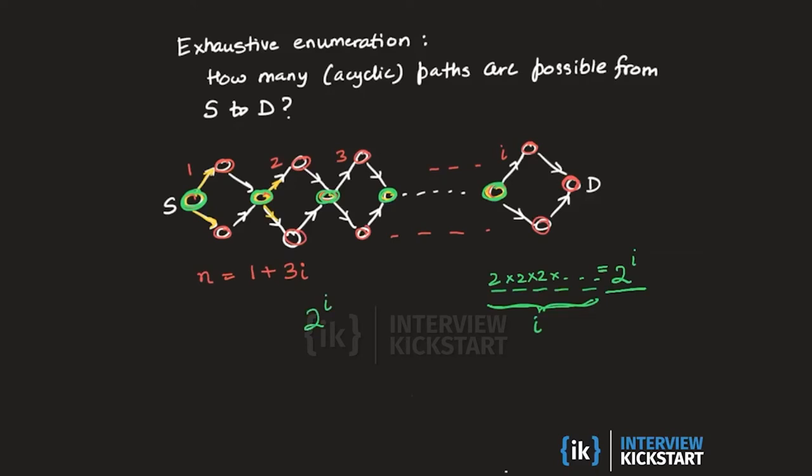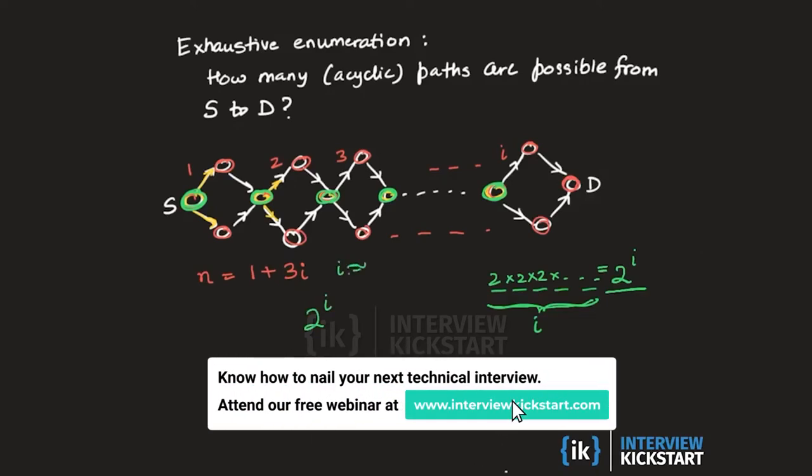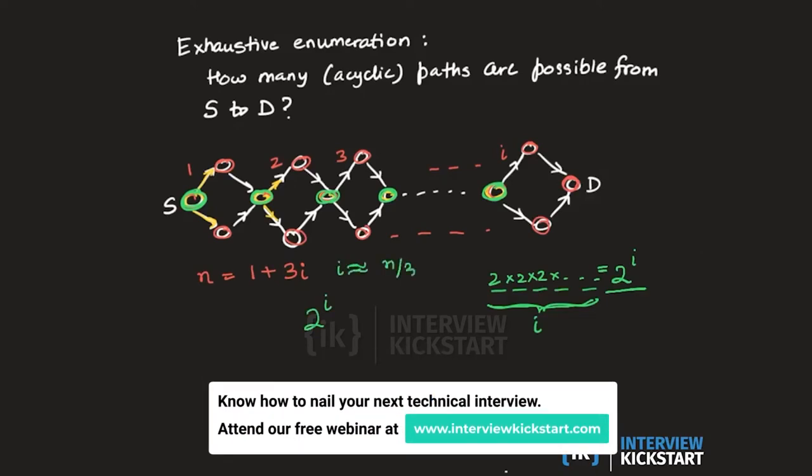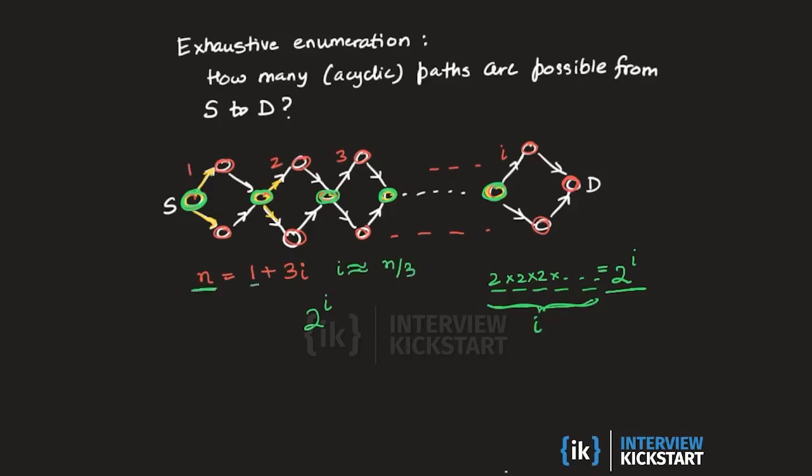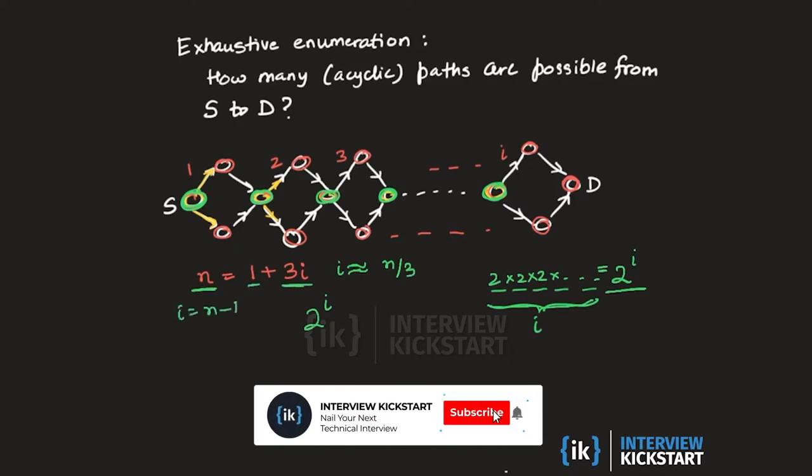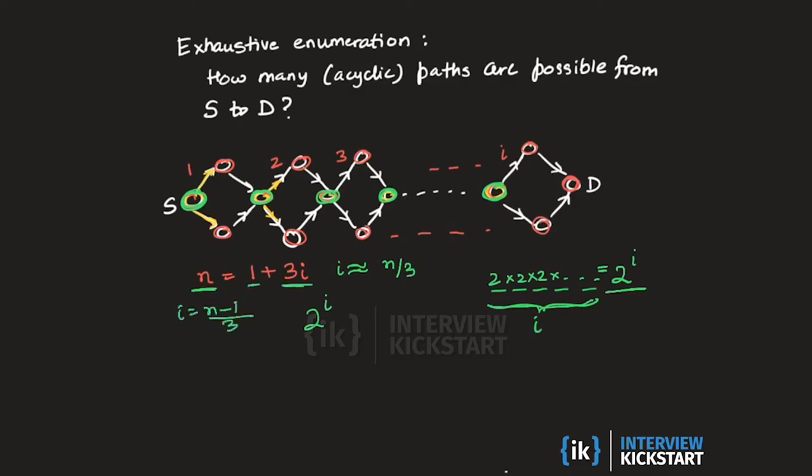Now I itself is roughly speaking N by 3 because N is one more than some multiple of I. So I is going to be N minus 1 divided by 3, which is roughly N by 3 if N is large. So I can write 2 raised to the power I as 2 raised to the power N by 3 approximately.